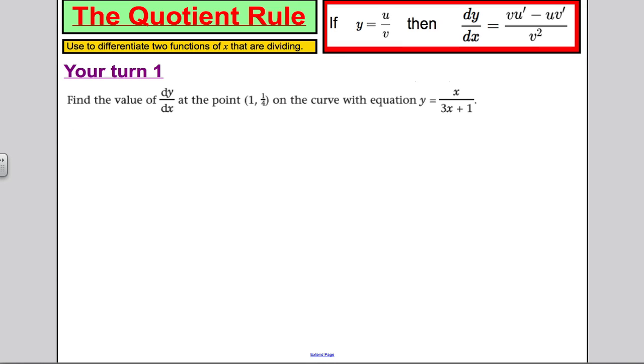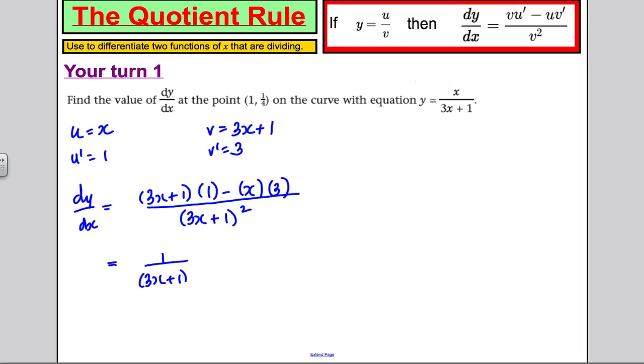Okay, state your u and your v. u is equal to x. The numerator v is equal to 3x plus 1. u dashed is therefore 1. v dashed is therefore 3. dy by dx. Well, that's v u dashed, so it's 3x plus 1 times 1. Subtract u v dashed, so x multiplied by 3, all divided by v squared. So 3x plus 1 squared. Tidying up, therefore, we would get 1 on the top, so we would get 1 over 3x plus 1, all squared. That is our dy by dx. That is our gradient function.